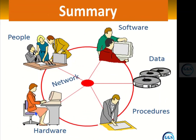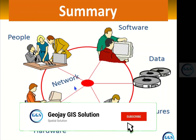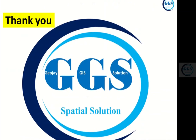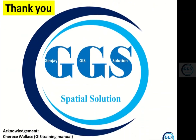In summary, the components of GIS include hardware, software, people, data, procedures, and network. Together they form a system — a flow of connected units. If you remove one, the system becomes useless. All components are related, connected, and working together, and that connection is what makes it a Geographic Information System. Thank you for watching — please subscribe to this channel.